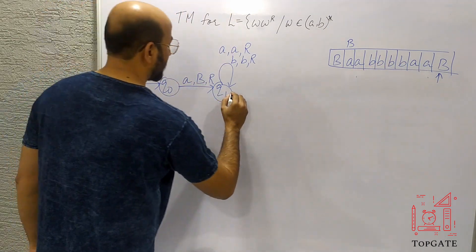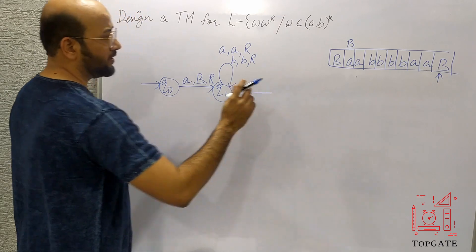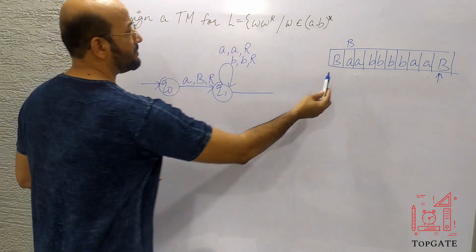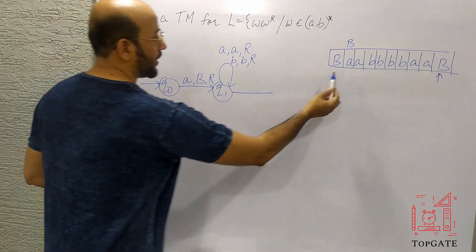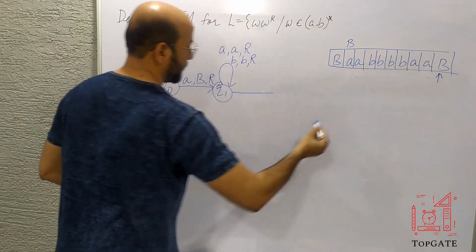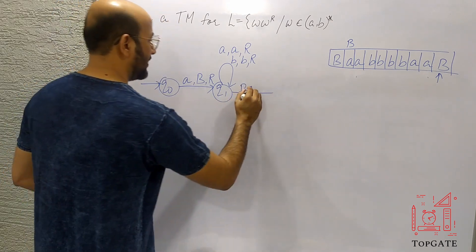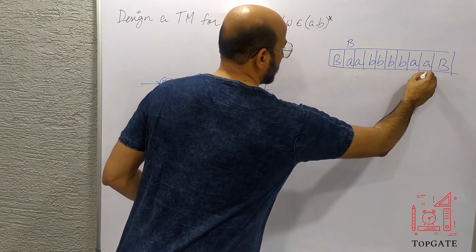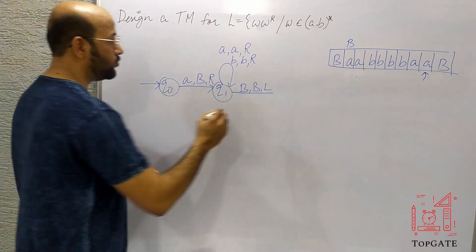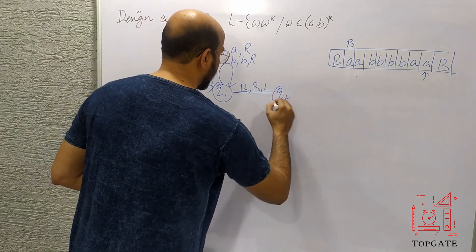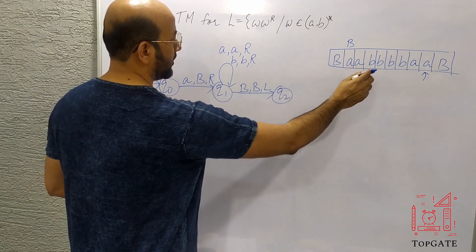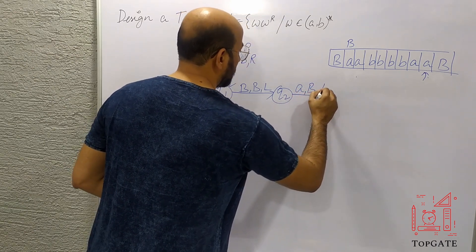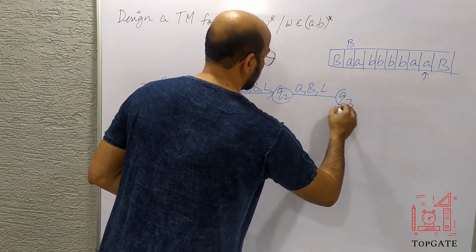At Q1, when we reach this last B, we do not change it — it is the border near which we expect to find the matching character. Since we started with A, we need to find A here. So from Q1, if we find B we keep it as B and move left. The pointer now points to the corresponding A. At Q2, if we find A, we change it to blank and move left, going to state Q3.